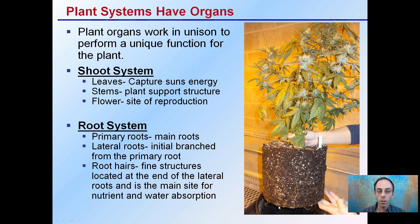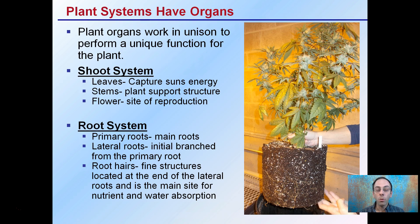Below ground, the root system includes the primary roots, which are the main thick roots, the lateral roots, which branch from the primary root, and very fine structures we call root hairs. These are at the end of the lateral roots and are the main site of nutrient and water absorption. These thin regions have a very high surface area allowing for efficient absorption of nutrients and water in the soil or substrate.